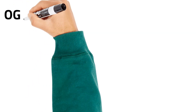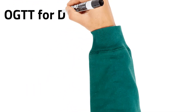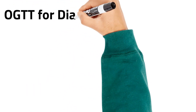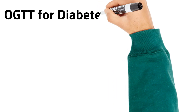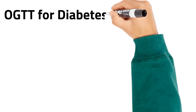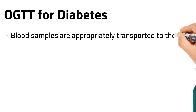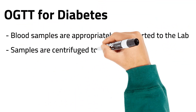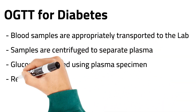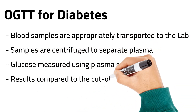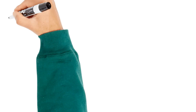Once the samples are collected, they are transported appropriately to the laboratory, where the specimens are centrifuged and the plasma samples are then used to measure glucose. The results are compared to the cut-off values and interpreted according to the established guidelines.